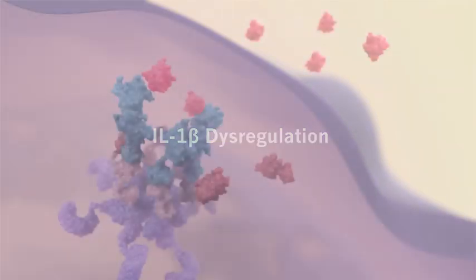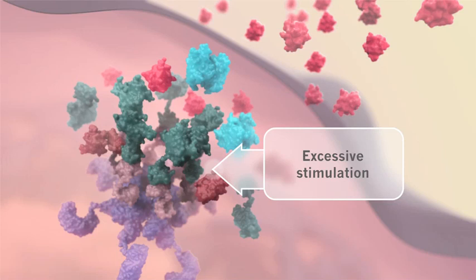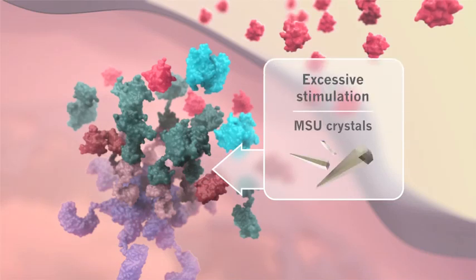IL-1-beta dysregulation may result from excessive stimulation of the inflammasome, as occurs in monosodium urate crystal-induced gouty arthritis.